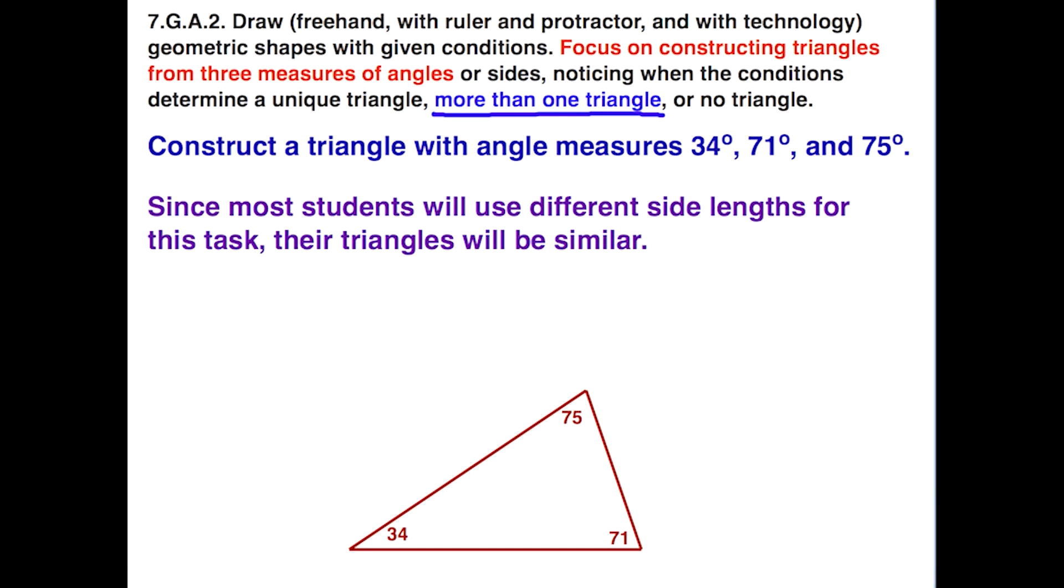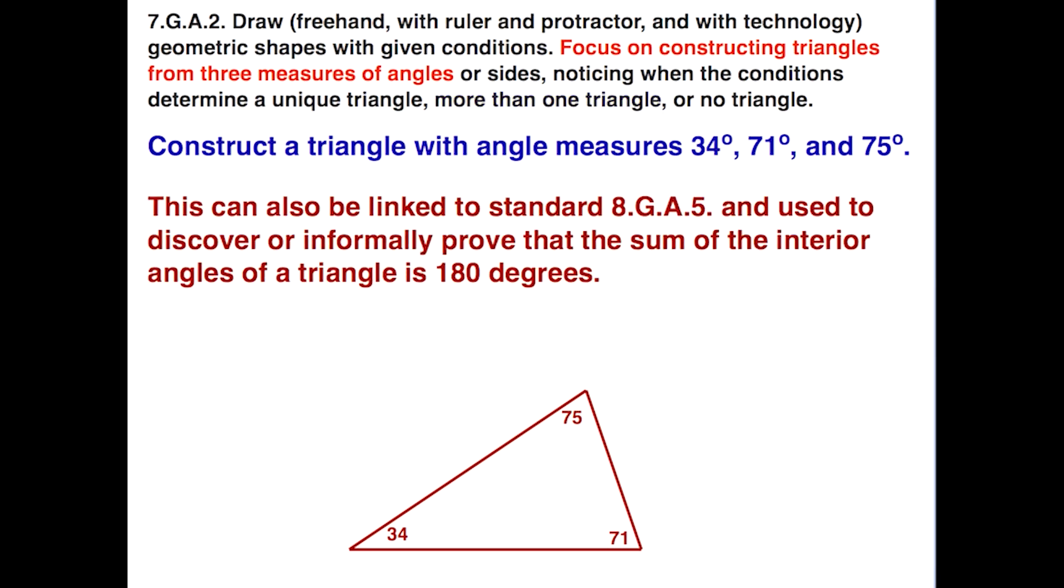So this sets up this idea of these triangles being similar. So in fact, if you look at this in terms of the actual sides, we will have more than one triangle formed. So this might be an example here of what some of the different triangles that students come up with would look like. Now, we can use this and link it to standard 8.G.A.4, but what we can also do is link this to standard 8.G.A.5 and use it to discover or informally prove that the sum of the interior angles of a triangle is 180 degrees. So this is what we can do to do that.